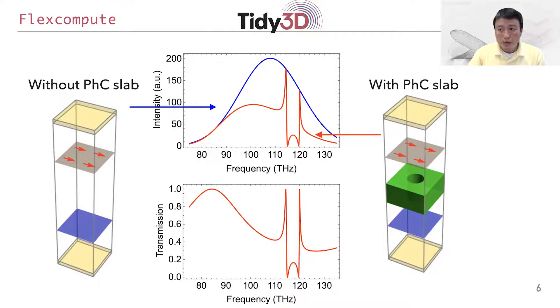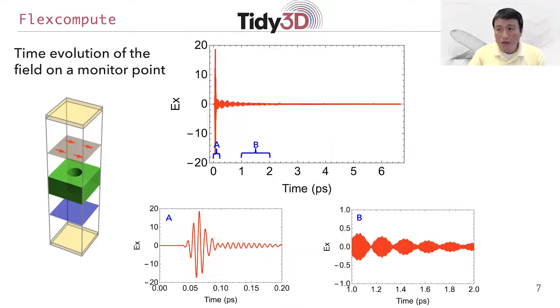Now, one very important consideration in simulating systems with highly resonant features is that you will need to run the simulation long enough. To illustrate this point, on the top here, I'm showing the time evolution of the electric field along the x direction at a monitor point on the blue plane on the left.